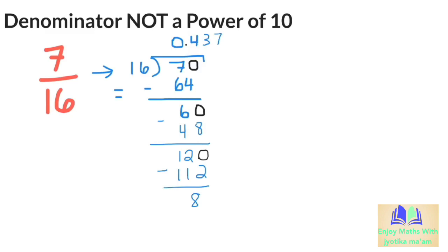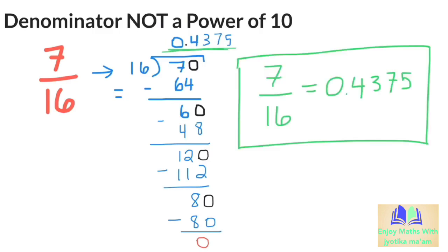Adding one more 0, we can see that 16 goes into 80, 5 times, and this time we have a remainder of 0. So we are done. The result is 0.4375.